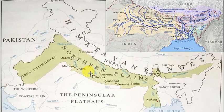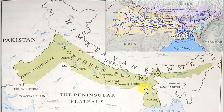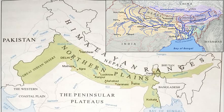The rivers come from the Himalayas in the north and from the central highlands in the south. This fertile silt is called alluvium. The thickness of alluvium deposited by the rivers varies from place to place. The Northern Plains cover a vast area.